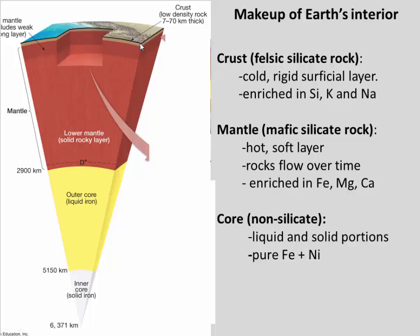Sitting on top of the mantle is the crust — perhaps like the crust on a crème brûlée. This is very thin: 7 to 70 kilometers thick, just a little skin sitting on the outside of Earth. It's chemically different — also made mostly of silicon and oxygen, so it's silicate rock, but it tends to be felsic in composition, enriched in potassium, sodium, and silica. It's also very cold and very rigid, so instead of flowing, Earth's crust always behaves in a rigid or brittle way.